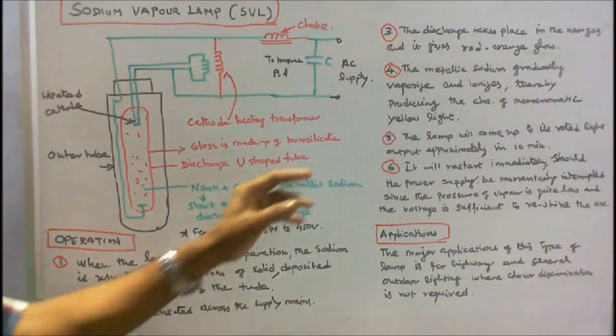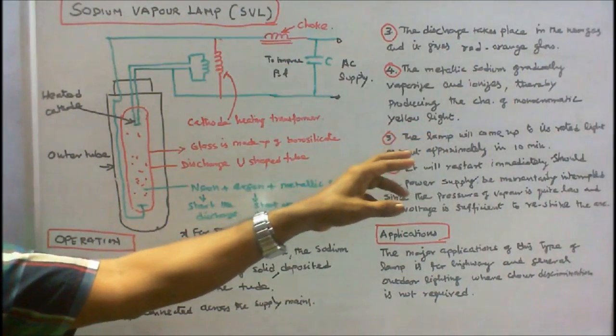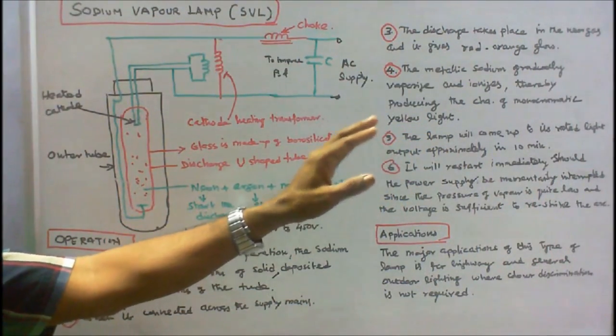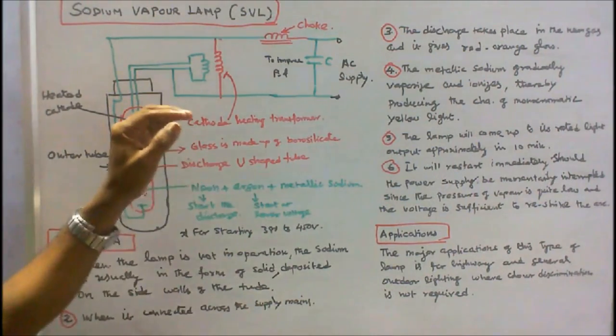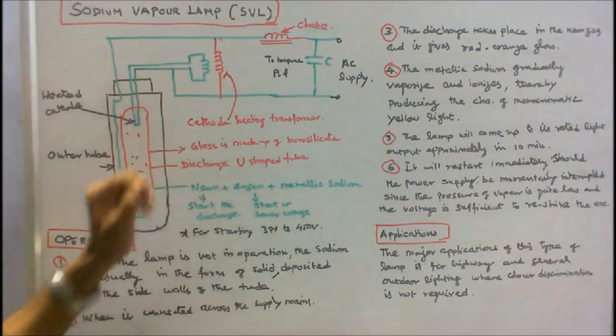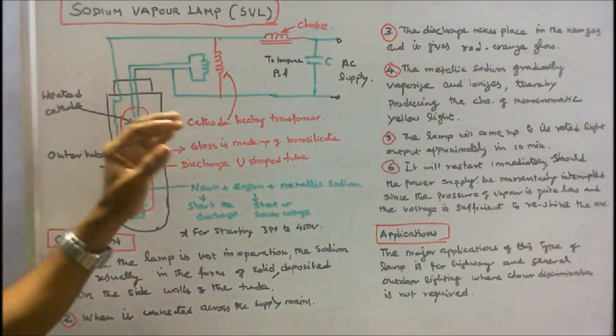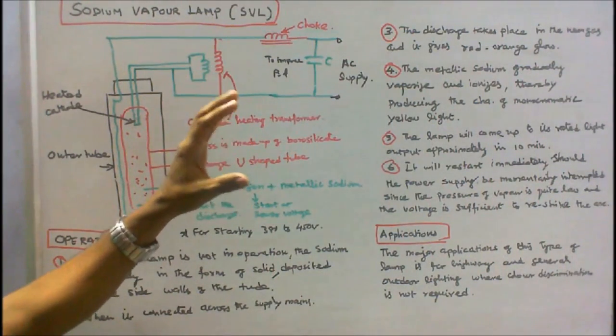The lamp will come up to its rated light output approximately in 10 minutes. That is the major disadvantage of sodium vapor lamp. To give its rated light output approximately it will take 7 to 10 minutes.